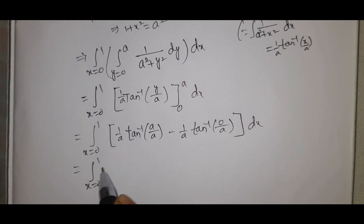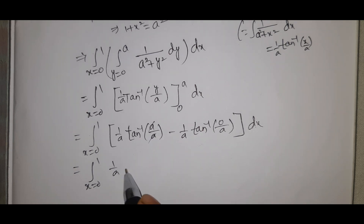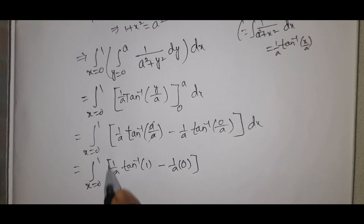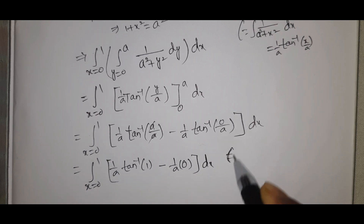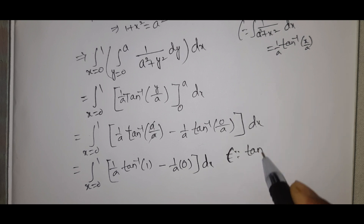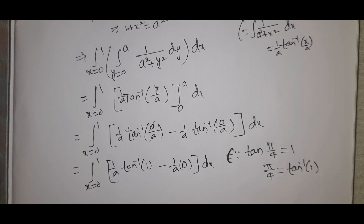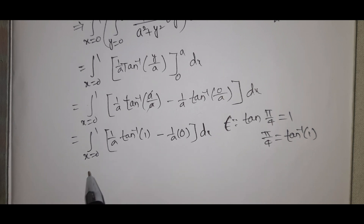That equals integral from x=0 to 1 of (1/a) tan⁻¹(1) dx. Now, tan(π/4) = 1, so tan⁻¹(1) = π/4.